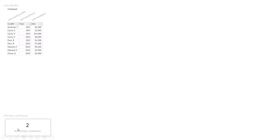What we're going to work towards is the number two — the number of returning customers. As smart humans, we can look at this table and see: Andreas only had a contract in 2021. Carla had three contracts — two in 2021 and one in 2022 — so Carla is a returning customer. Don had a contract in both 2021 and 2022, so Don's a returning customer. Edward had two contracts but they're both in 2022, so Edward's not returning. And Fiona just has the one contract in 2022.